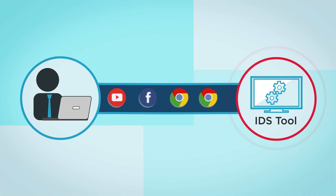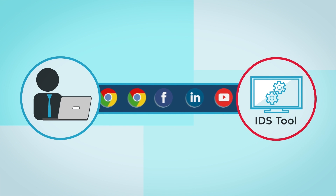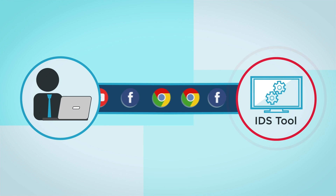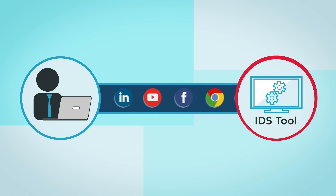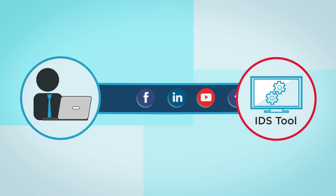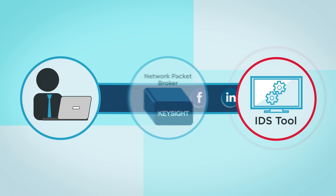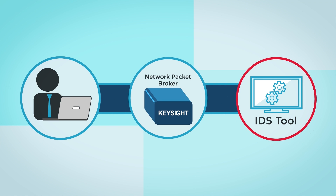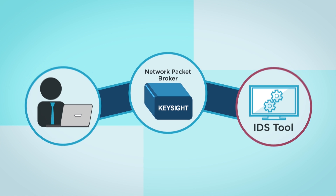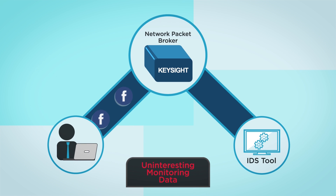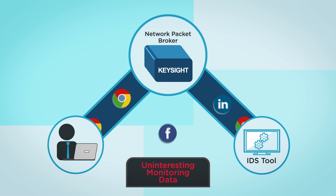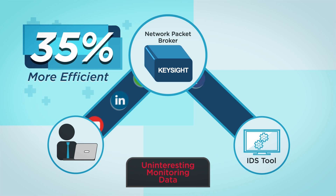Here's an example of the efficiency you get when screening application data before it is sent to an intrusion detection system. Information that is not interesting can be removed and skip the IDS inspection step. This can make your IDS solution up to 35% more efficient.